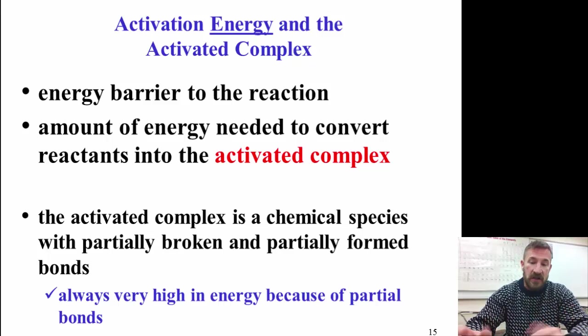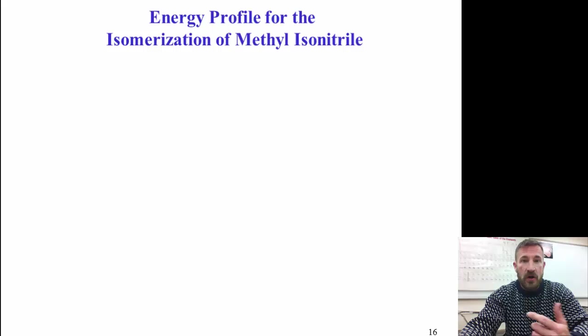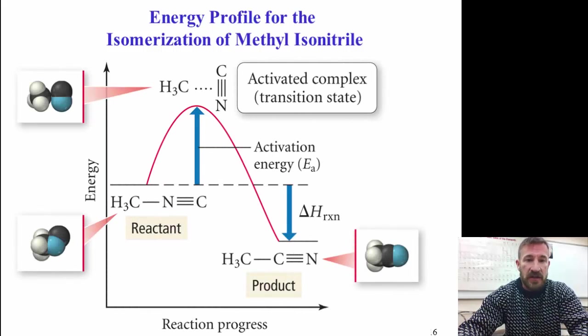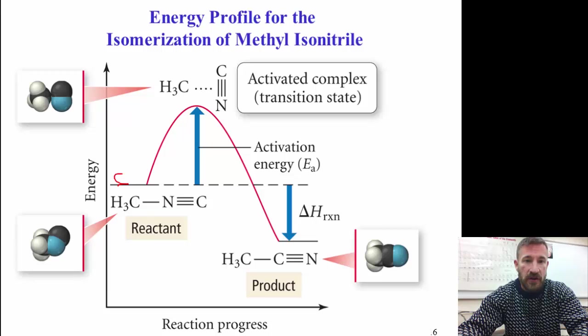Let's look at the energy profile of the isomerization of methyl isonitrile. So we have the reactants would be on the lower part. So these reactants, their energy is right here, and the energy of the products are right here. And we've talked about the substances before. All that actually happens is the nitrogen and the carbon flip sides. The carbon goes to where the nitrogen is, and the nitrogen goes where the carbon is.